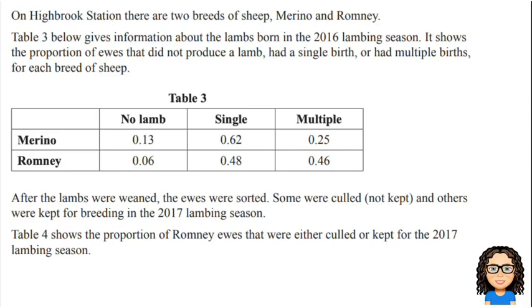So here is our question. We've got some information about lambs — it talks about how there are two breeds of sheep, Merino and Romney. The table below talks about the proportion of ewes that did not produce a lamb, had a single birth, or had multiple births for each breed of sheep. So we've got our two different breeds, the Merino and the Romney, and we've got what the outcome was.